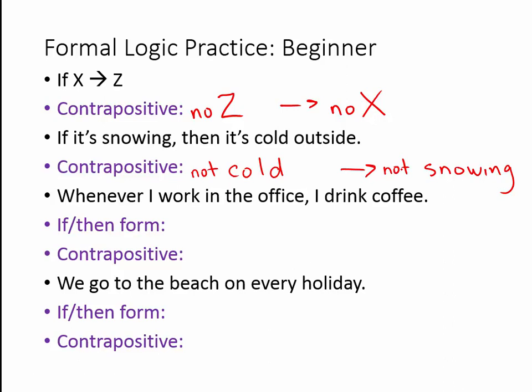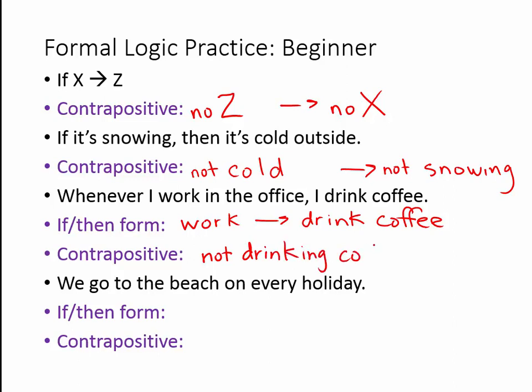Next one: whenever I work in the office, I drink coffee. This one is a little trickier because it's not set up in the typical if-then form. You should ask yourself which term is sufficient and which is necessary. Working in the office is sufficient to know that I'm drinking coffee, because the word 'whenever' means every time I work in the office, I drink coffee. So: if I'm working in the office, then I'm drinking coffee. The contrapositive is straightforward: if not drinking coffee, then not working in the office.